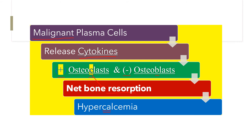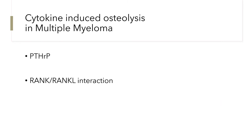This explains why hypercalcemia is seen in multiple myeloma. The malignant plasma cells release cytokines which have a net effect of stimulating osteoclastic activity, leading to bone resorption and release of minerals from the bone — mainly calcium — leading to hypercalcemia. The molecular basis of this cytokine-induced osteolysis has been studied in multiple myeloma, and it has been found to be due to the activity of the cytokine parathyroid hormone-related peptide and the interaction between the RANK molecule present in osteoclasts and its ligand present in the osteoblasts.